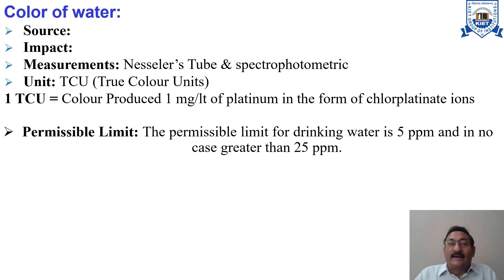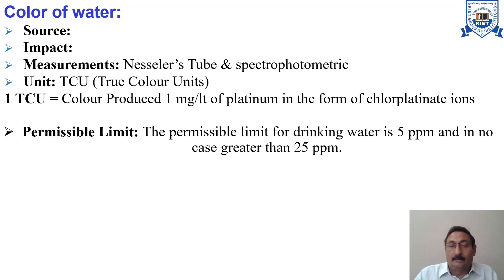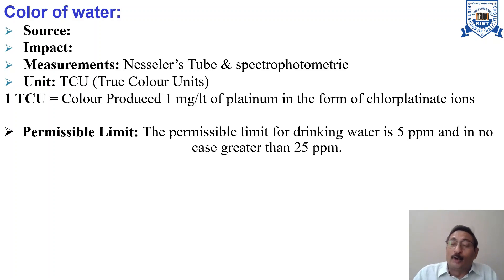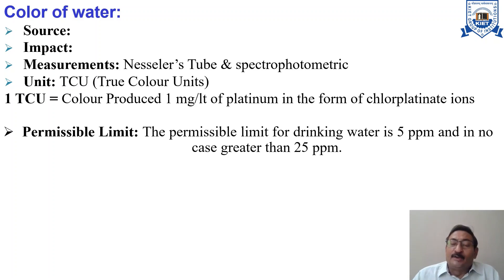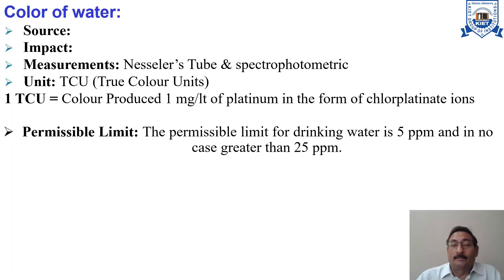The next parameter is color. Water whose color is partly due to suspended matter is said to have an apparent color, while the color contributed by dissolved solids is known as true color. Apparent color is not very important because the water can be screened or filtered to remove it. Our basic concern is with true color.